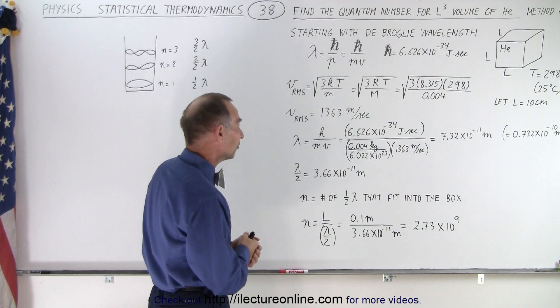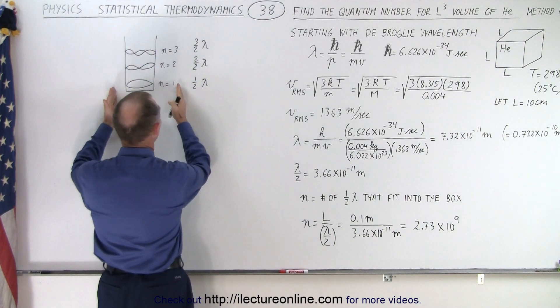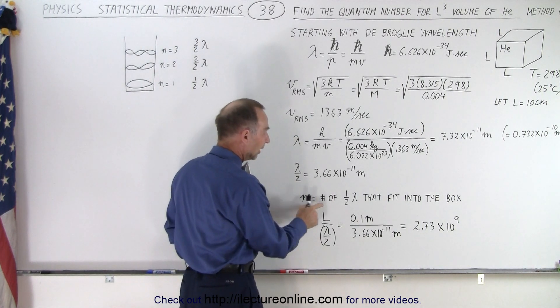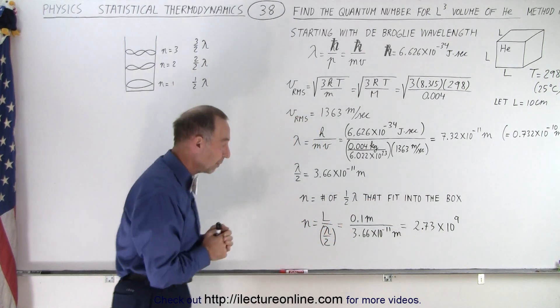Alright, it gives us some feel for it. Now we divide the wavelength by 2, because we want to know the number of half wavelengths, and then we can say that the quantum number is equal to the number of half wavelengths that fit into the box in the single dimension.